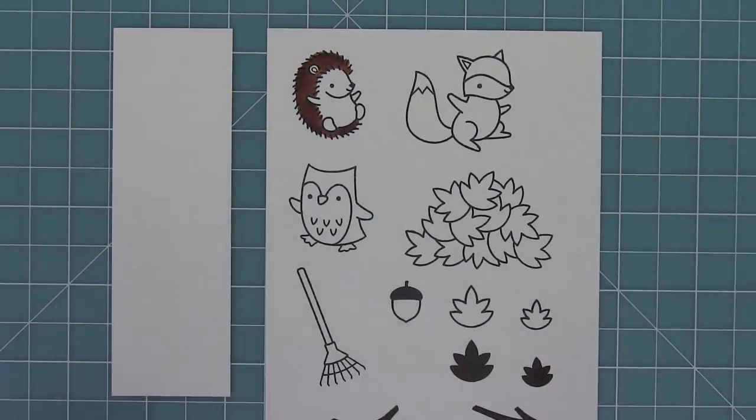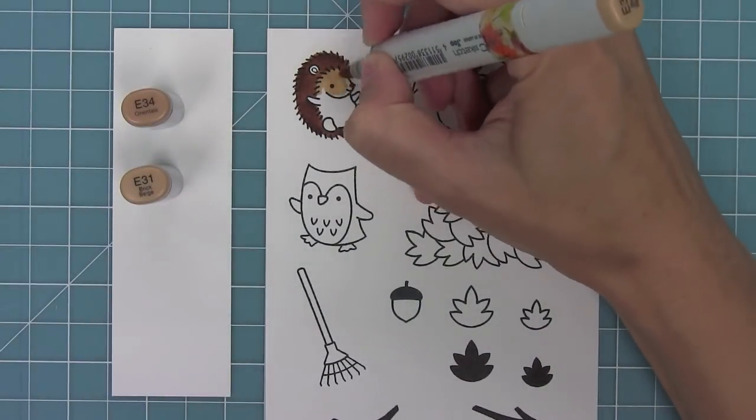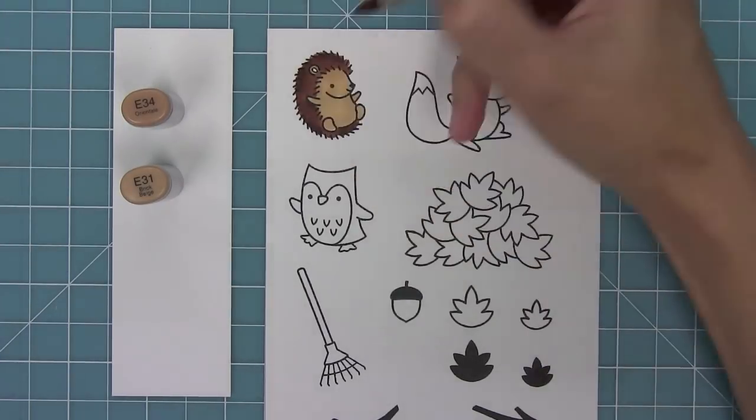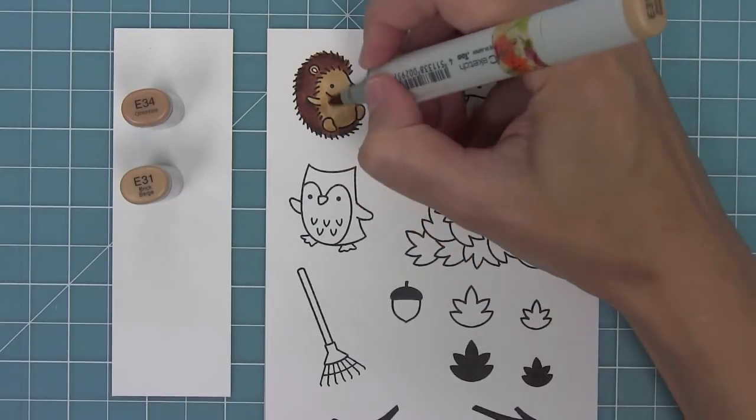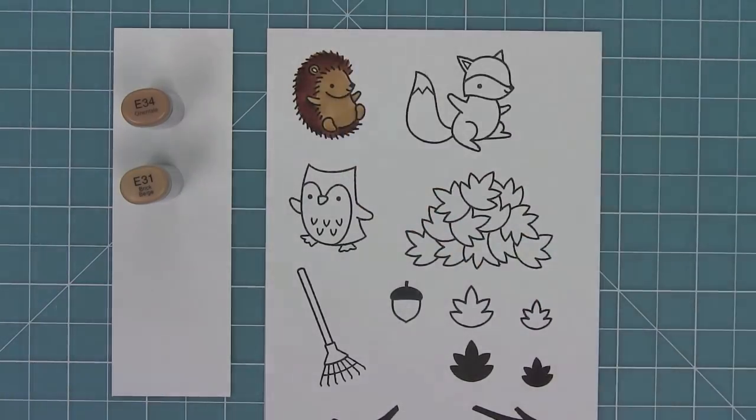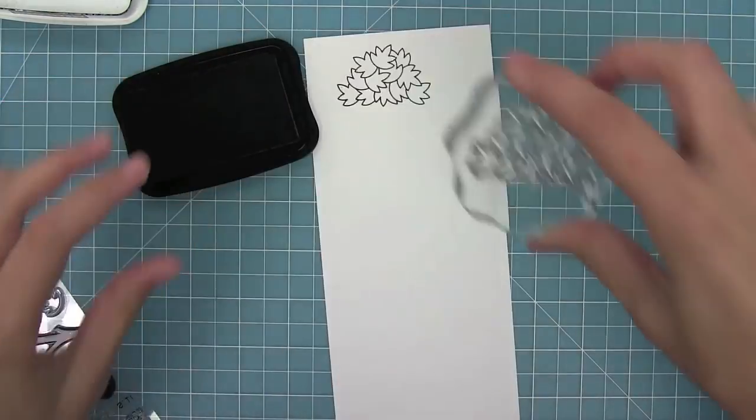I'll continue to blend those in and then start working on his little face. Now I'm going to add shadow wherever there's curves - underneath his chin, around his feet, and under his arms - and then blend those shadows out to give him a nice three-dimensional look.